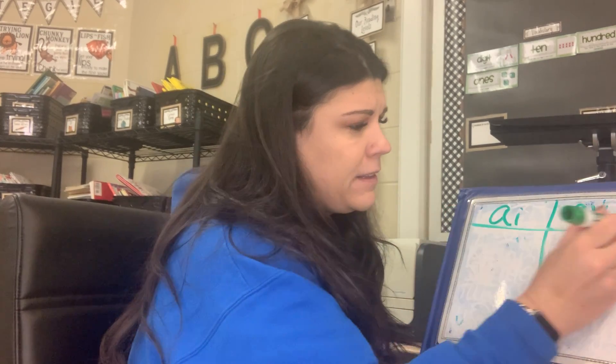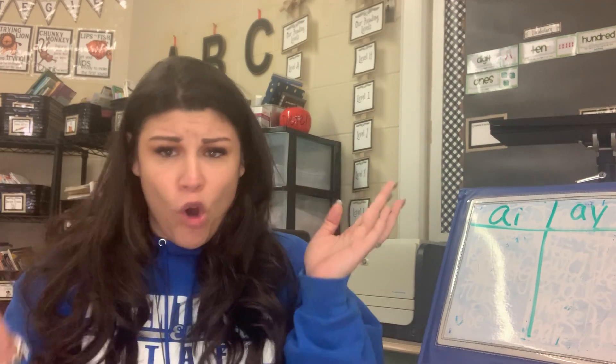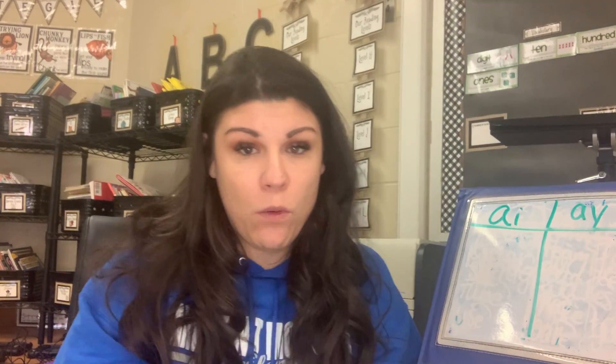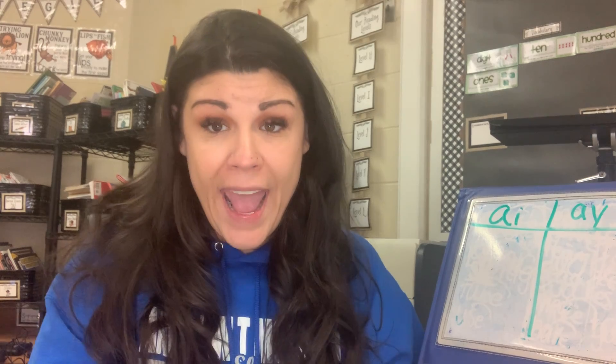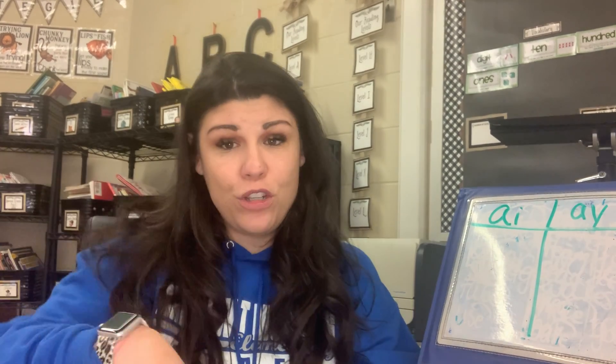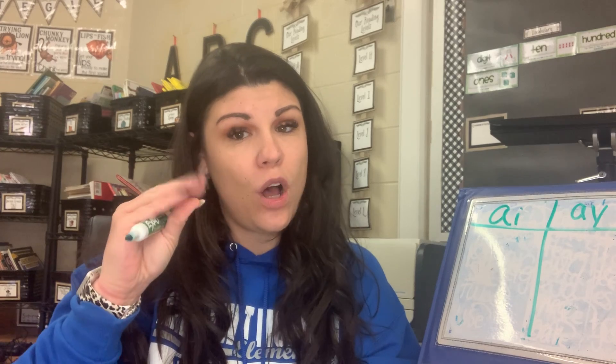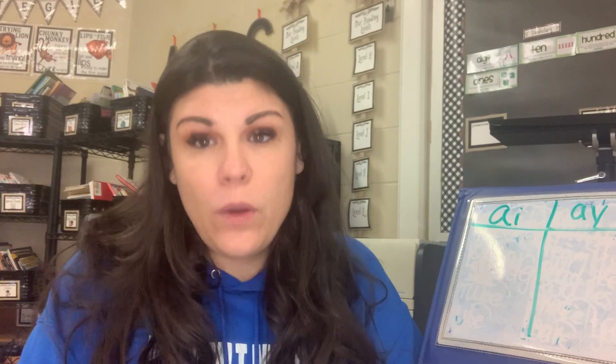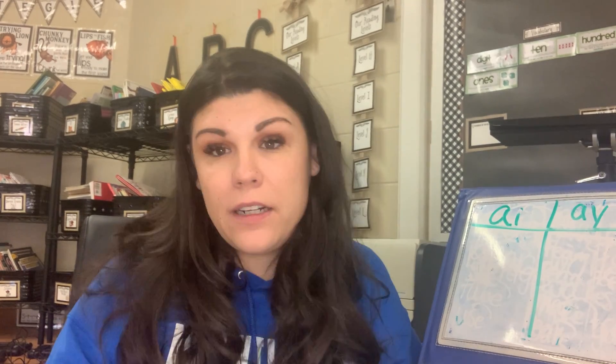So we have A-I. The other vowel team is going to be A-Y. Now, you might be like, Mrs. Dietrich, what's going on here? I've never heard Y is a vowel. Well, sometimes Y is considered a vowel. In this case, it is part of the vowel team A-Y. Both of these are going to say A because when two vowels go walking, the first one does the talking — it says its own name and it's long.